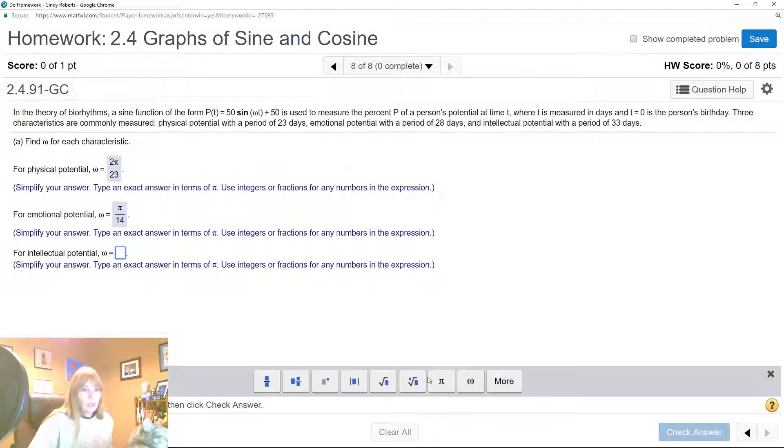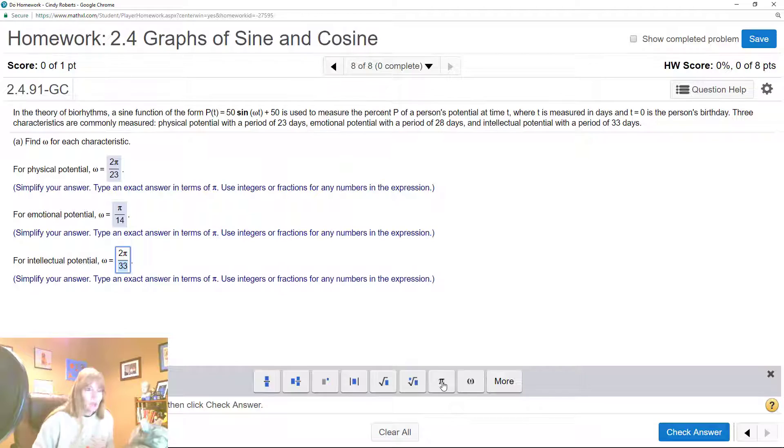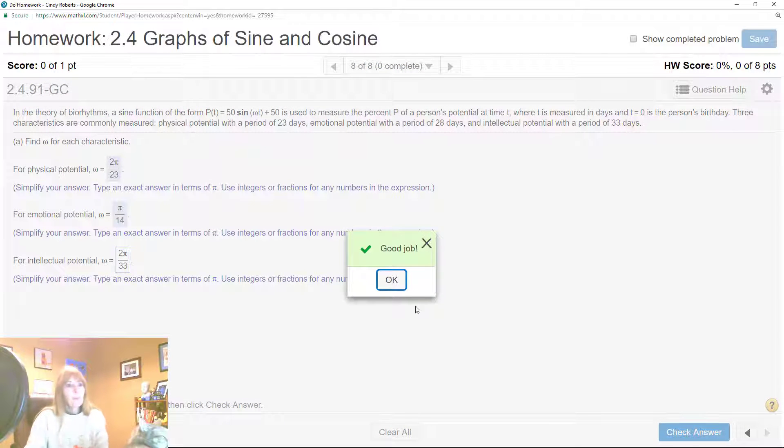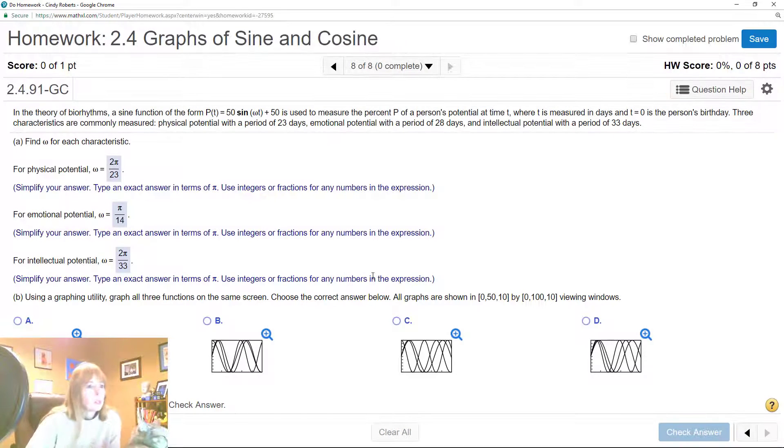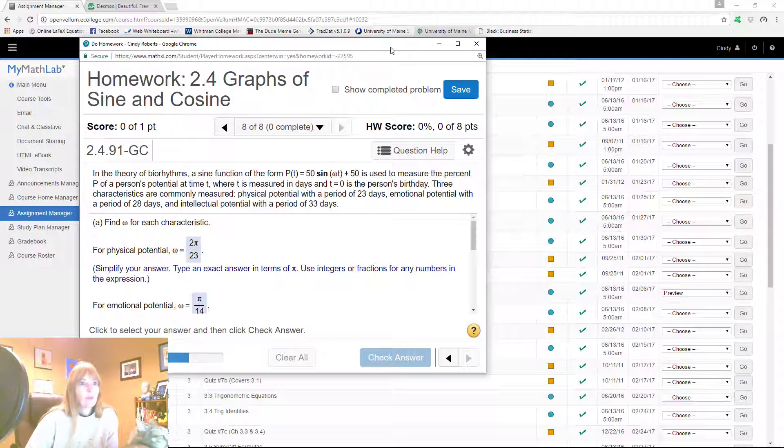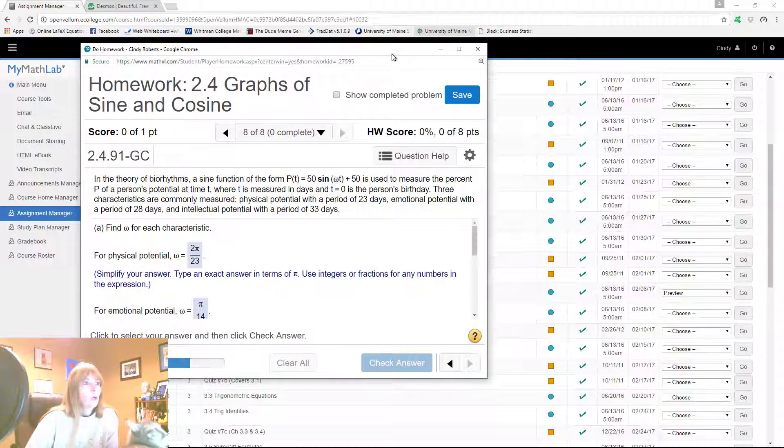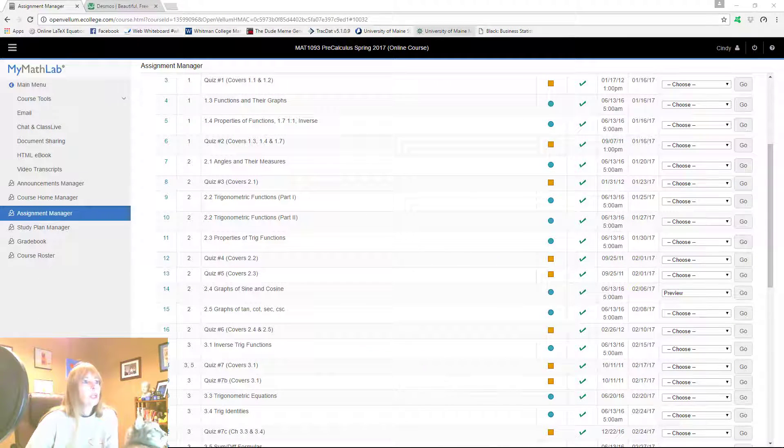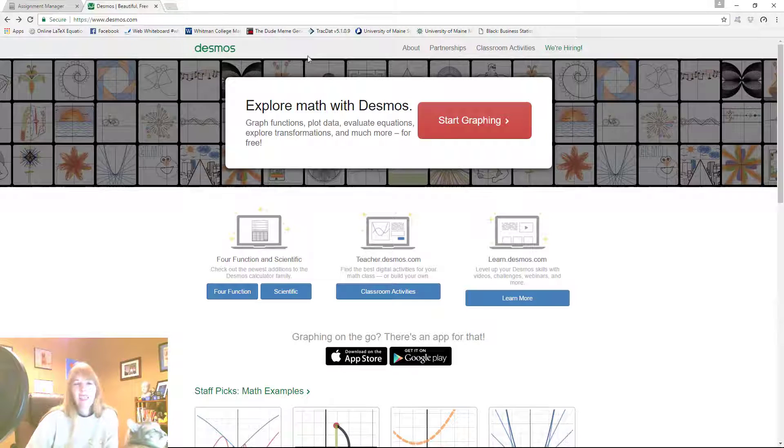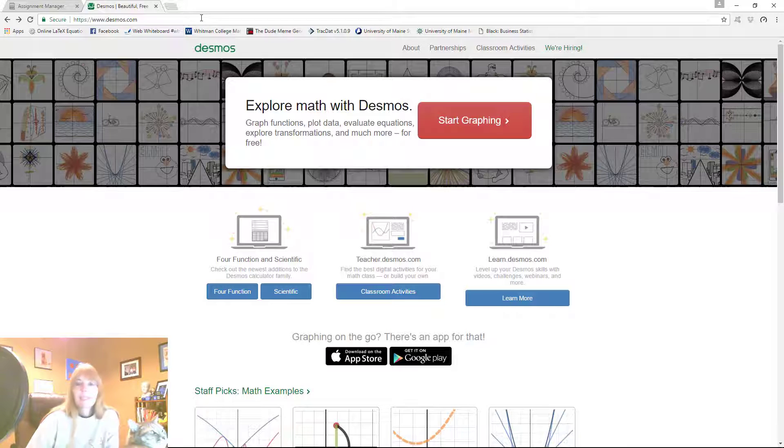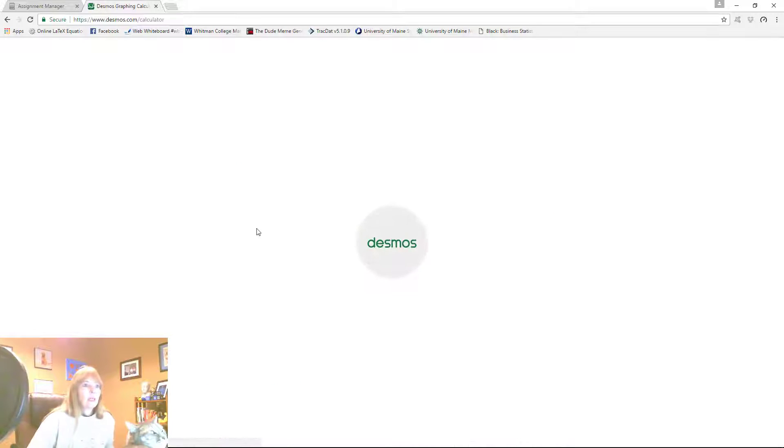And then the next one, 2π over 33. Okay, all right, then it asks which one of these are the graphs. So what I do, what would Cindy do, is I go graph these. So let's go over there and I use, I like this program Desmos.com. It's free, you can also get it as an app on your phone, iPad, tablets, all that good stuff.